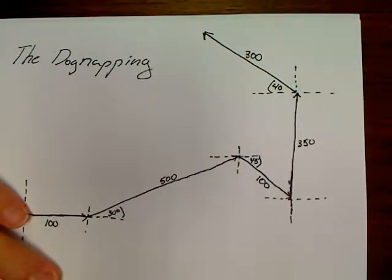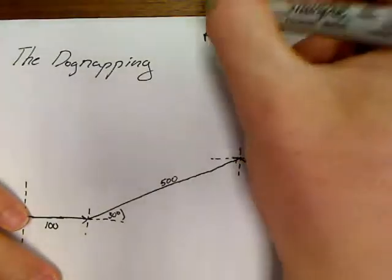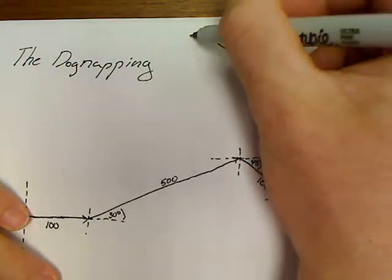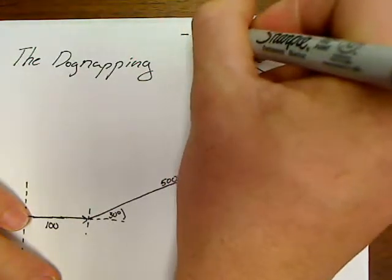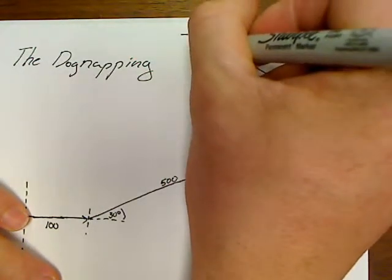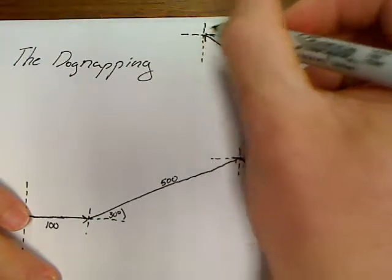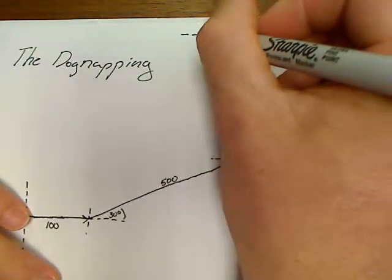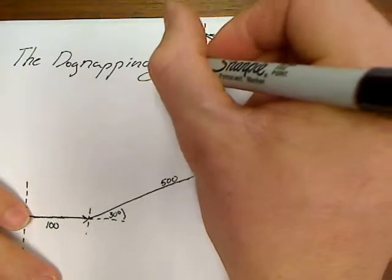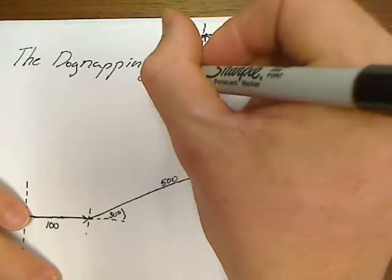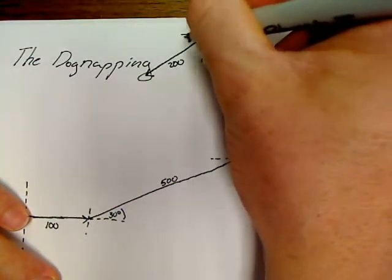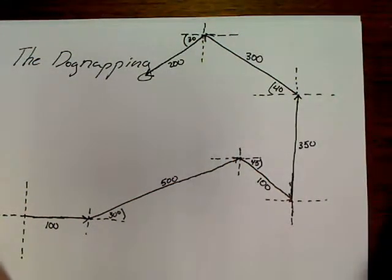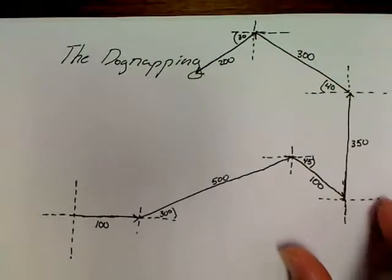Now, what? Then he goes 200 at 30 degrees south of west. So going all the way up to here. See if I can get marks on the paper. He then goes 200 at 30 degrees south of west. So 200 at 30 degrees south of west. And there is the complete picture.